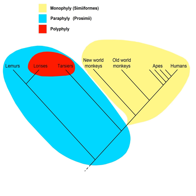Researchers concerned more with ecology than with systematics may take polyphyletic groups as legitimate subject matter. The similarities in activity within the fungus group Alternaria, for example, can lead researchers to regard the group as a valid genus while acknowledging its polyphyly.